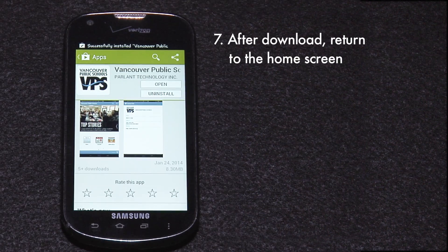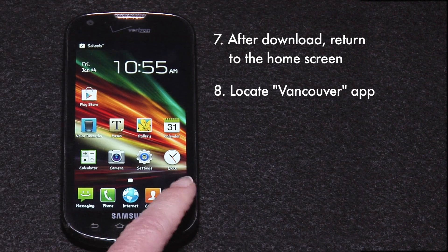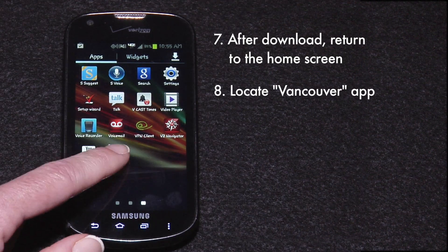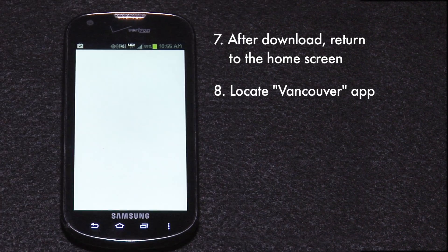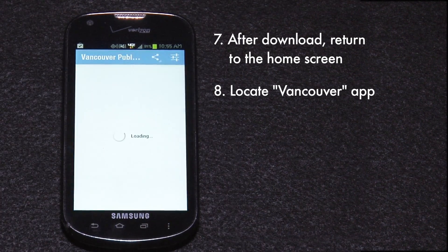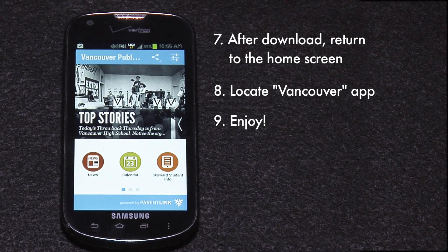When the app is finished downloading, return to the home screen. Locate and open the app called Vancouver. You are now ready to use the VPS mobile app.